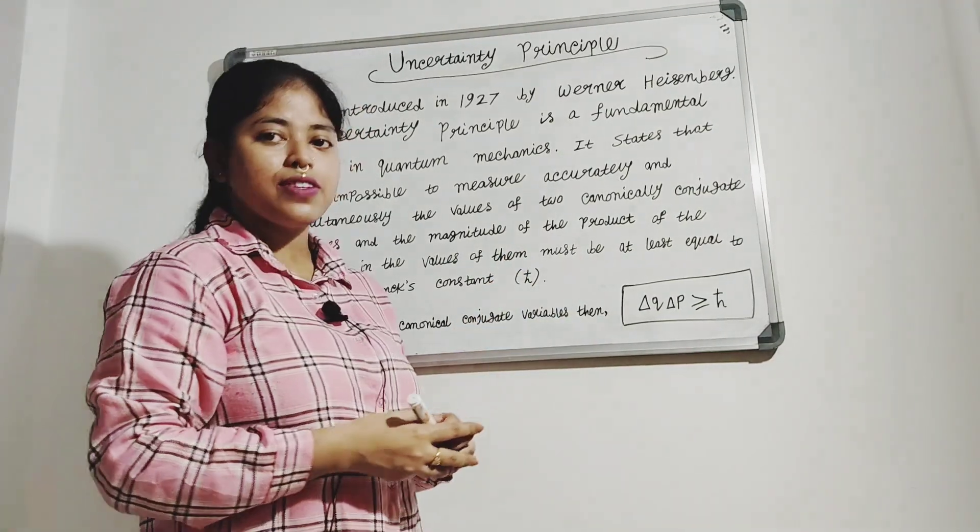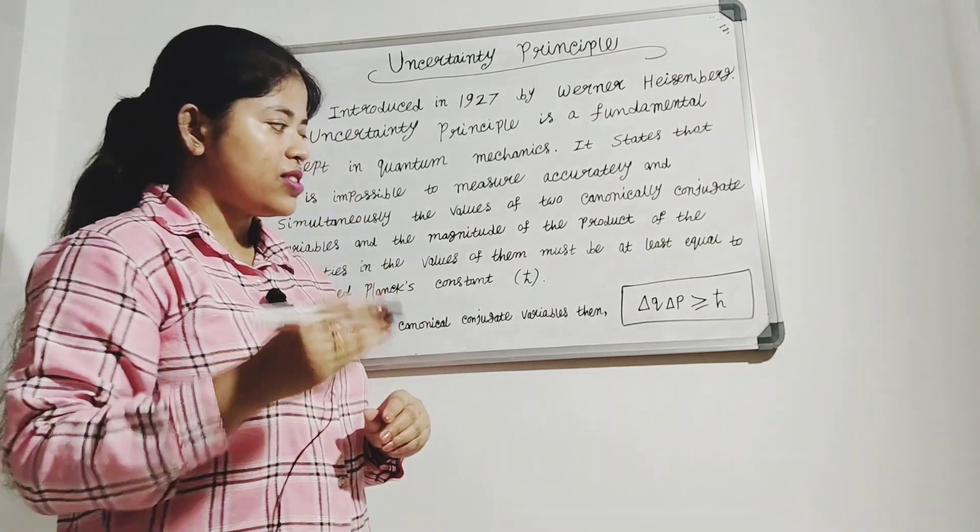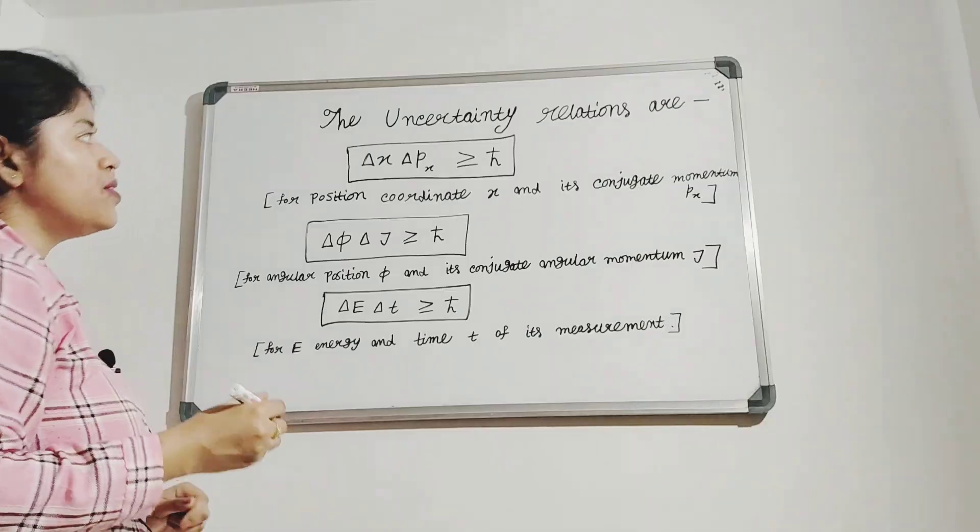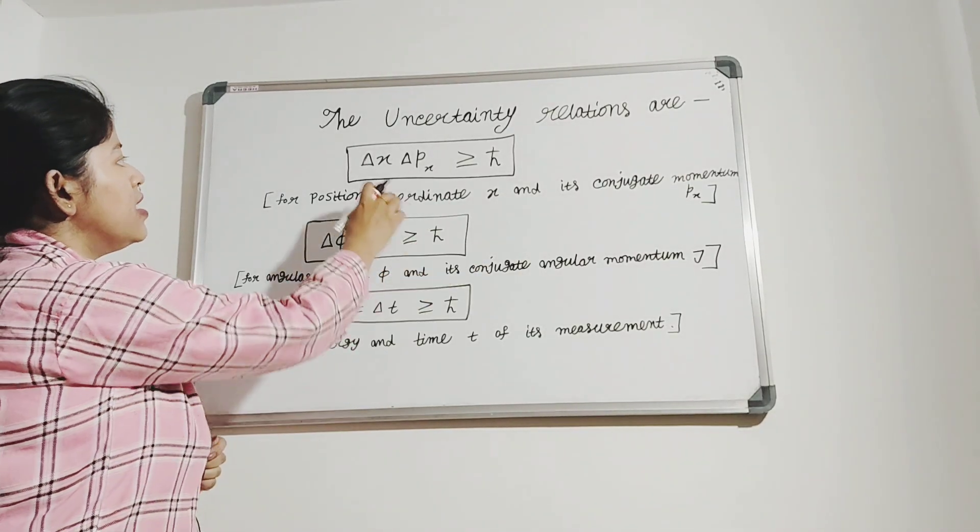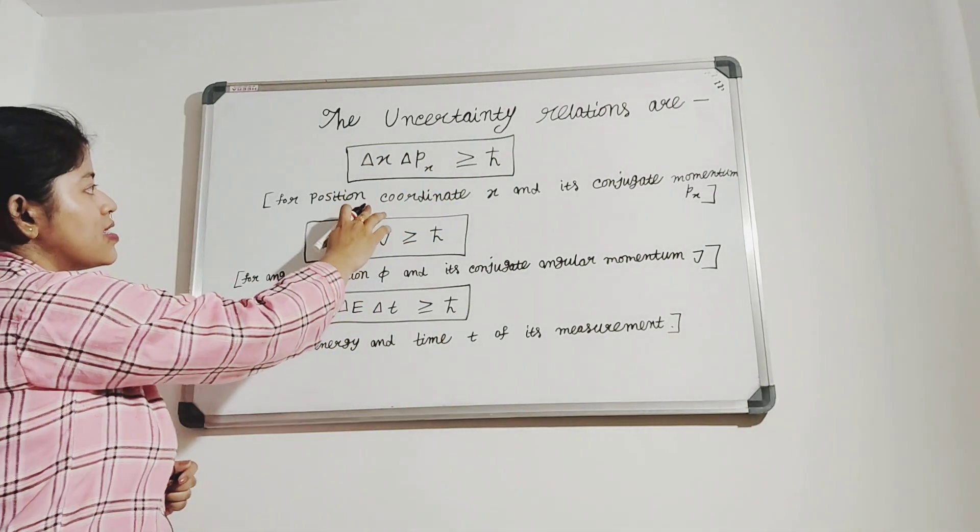Now considering different canonically conjugate variables, we get three uncertainty relations. The uncertainty relations are delta x delta px greater than or equal to h-cut, where x is the position coordinate and its conjugate momentum is px.